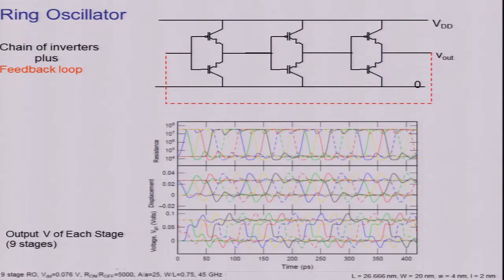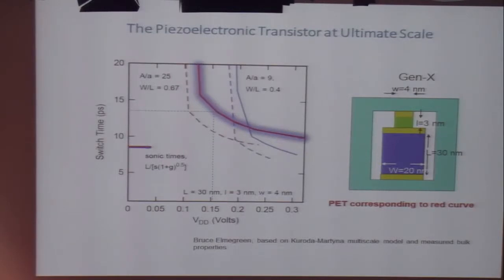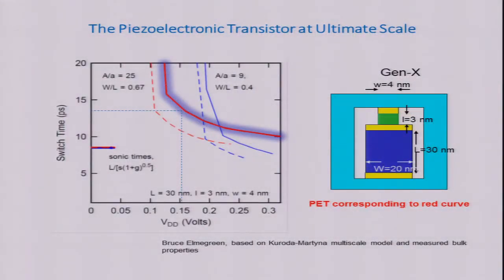The energy required to switch is a few attojoule at scale. This is the ring oscillator, which is what we use to set the scale. Here is a description of the scale. This is the device which we might imagine what we call ultimate scale. The piezoelectric is 30 nanometers tall, 20 nanometers wide, and the piezo resistor is 3 nanometers tall and 4 nanometers wide. These are some earlier simulations with a dashed line. We've included more kinds of effects getting this full line here.